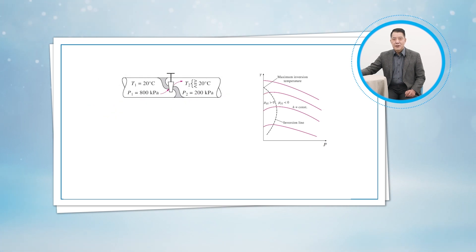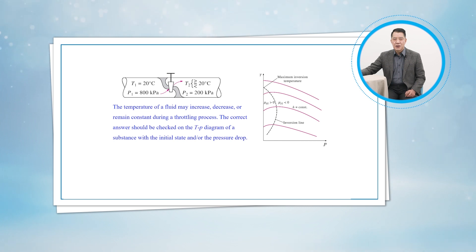As shown in this figure, can you figure out the outlet temperature after this throttling process? You will remember that a fluid may experience a large drop in its temperature as the result of throttling, which forms the basis of operation for refrigerators and air conditioners. This is not always the case. However, the temperature of the fluid may remain unchanged or it may even increase during a throttling process. The correct answer must be checked on the T-P diagram of a substance with the initial state and the pressure drop. That's all for this task. Thank you very much and see you next time.